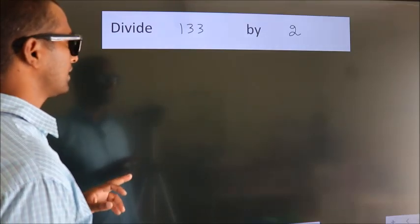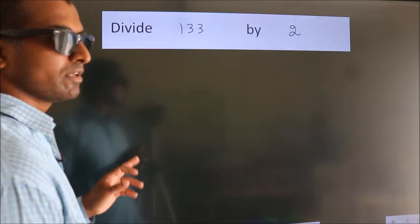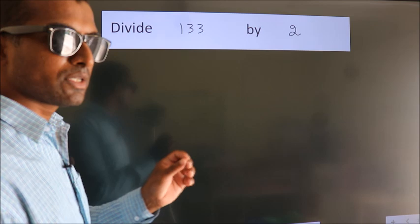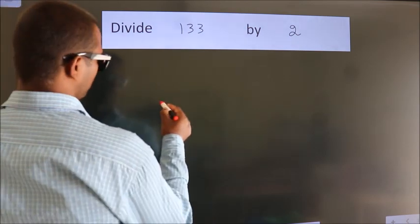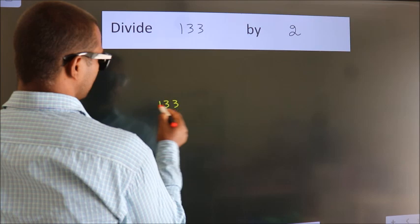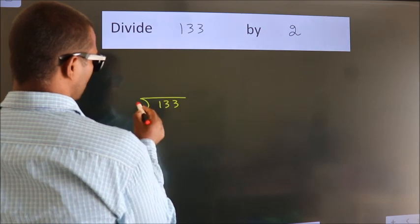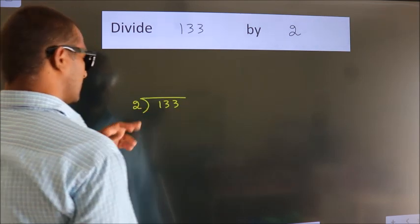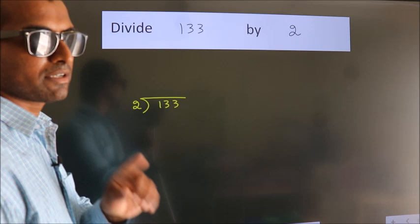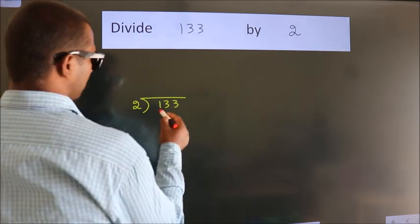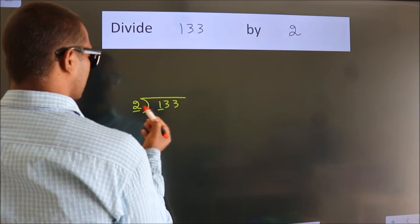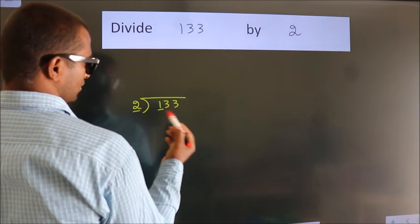Divide 133 by 2. To do this division, we should frame it in this way. 133 here, 2 here. This is your step 1. Next, here we have 1, here 2. 1 smaller than 2.